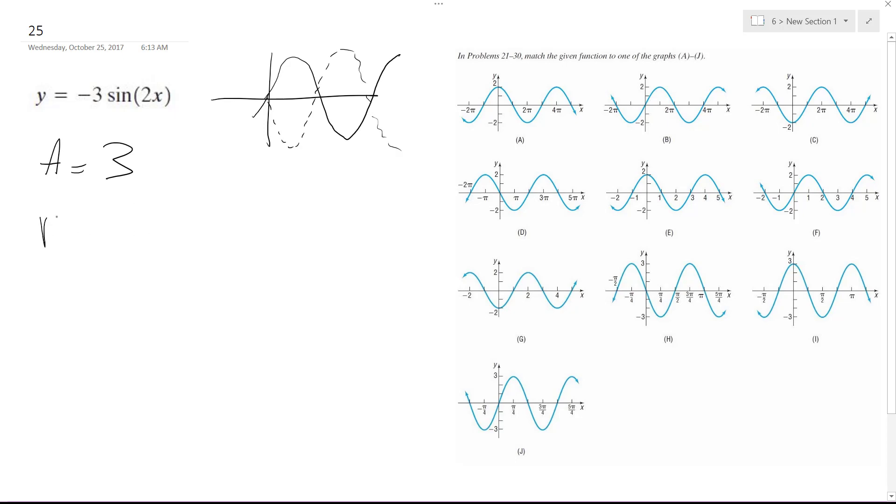So the period, it's going to be 2 pi divided by omega, which is going to be 2 pi, in this case divided by 2, which is equal to pi. It's inverted 3 and it's got a period of pi.